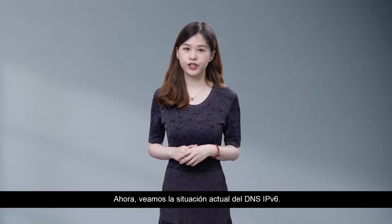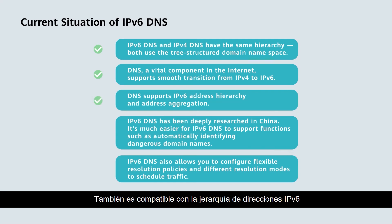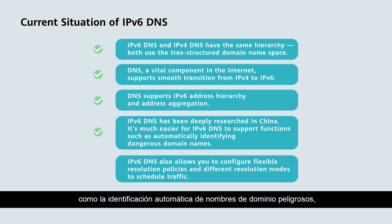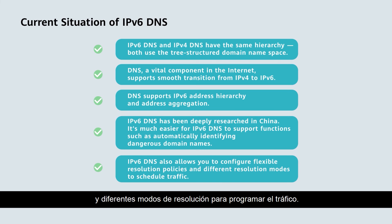Now let's have a look at the current situation of IPv6 DNS. IPv6 DNS and IPv4 DNS have the same hierarchy. DNS, a vital component of the internet, supports the transition from IPv4 to IPv6. It also supports IPv6 address hierarchy and address aggregation. IPv6 DNS has been deeply researched in China. It's much easier for IPv6 DNS to support functions such as automatically identifying dangerous domain names, restricting the number of concurrent recursive queries, and limiting the DNS resolution rate. IPv6 DNS also allows you to configure flexible resolution policies and different resolution modes to schedule traffic.